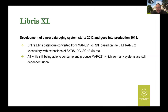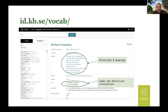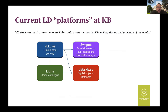LIBRIS XL became the new cataloguing system, with development starting in 2012 and going into production in 2018. The entire LIBRIS catalog was converted from MARC 21 to RDF based on a BIBFRAME 2 vocabulary, still using extensions of SKOS, DC, Schema.org, and so on, while remaining able to consume and produce MARC 21 because almost all surrounding systems are still dependent on that format. A key component is the KBV application vocabulary at id.kb.se, providing extensions and mappings to other ontologies with Swedish labels and definitions.